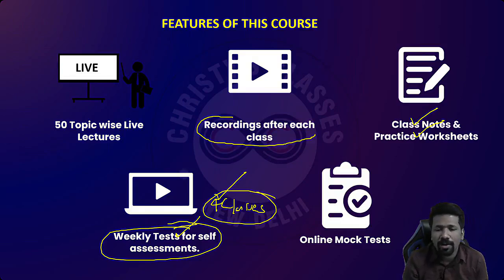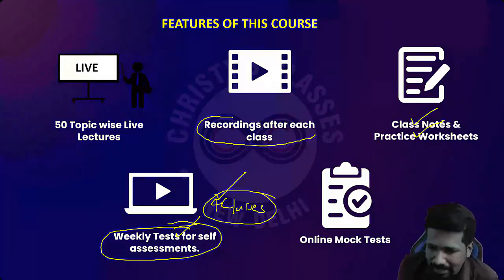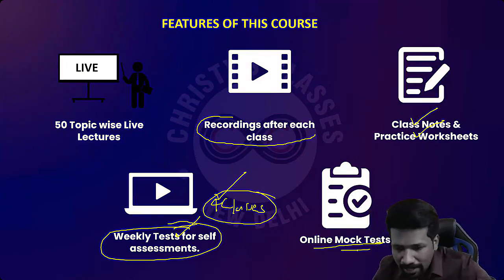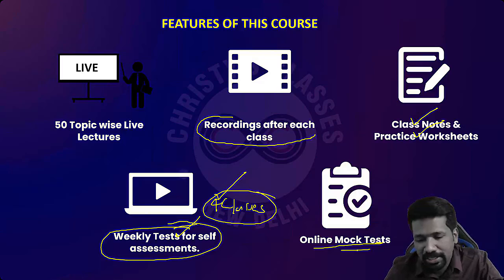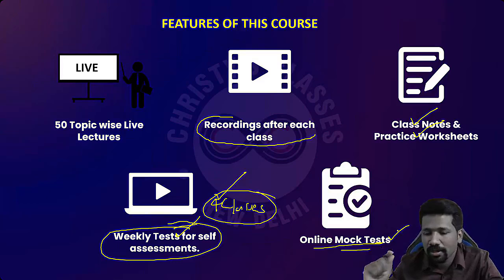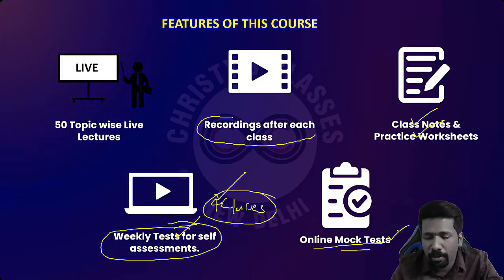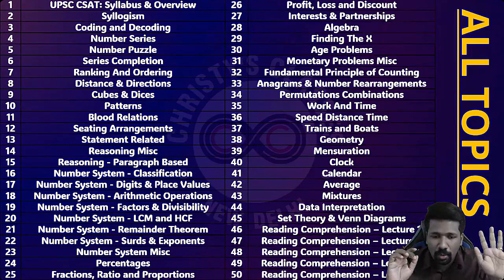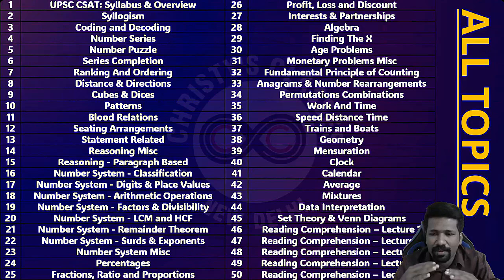There will be 10 full-length mock tests with 80 questions each, following the CSAT pattern — Quantitative Aptitude, Reasoning, and Comprehension — but these will happen after all live classes are completed. In addition to the 50 topic lectures, there are 5 dedicated doubt-clearing sessions: after roughly every 9 classes, the 10th will be a doubt-clearing session. In each live class, you can also ask doubts.